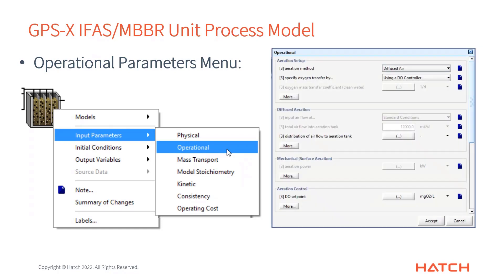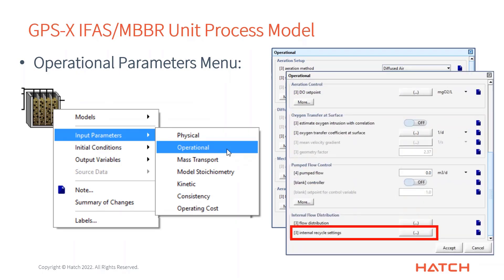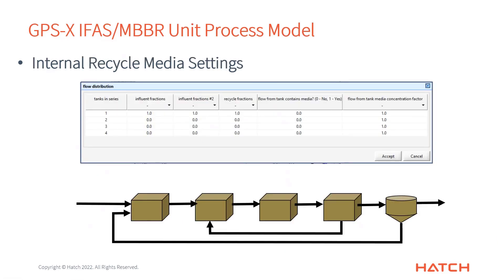Moving on to the operational parameters menu — I won't go into a lot of detail here because this is almost exactly the same as you'd find in a plug flow tank. It's really about aerating the system, so you'll find all the usual stuff for specifying diffused air details and the ability to use a DO controller. The DO set points are a little higher because in an IFAS system you typically have higher aeration just to keep everything well mixed.